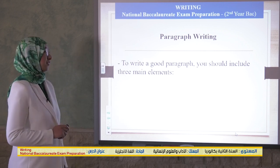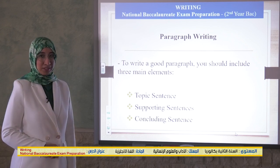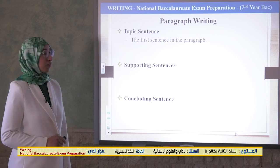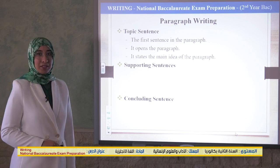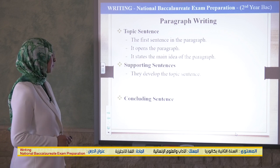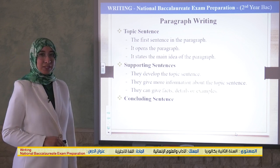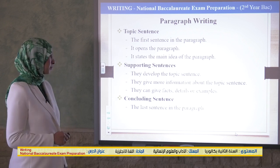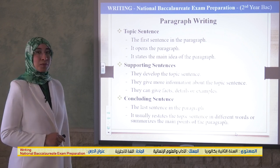The three main elements are: topic sentence, supporting sentences, and concluding sentence. The topic sentence is the first sentence in the paragraph — it opens the paragraph and states the main idea. Supporting sentences develop the topic sentence by giving more information, such as facts, details, or examples. The concluding sentence is the last sentence; it restates the topic sentence in different words or summarizes the main points.